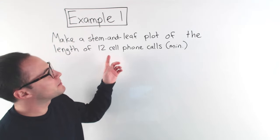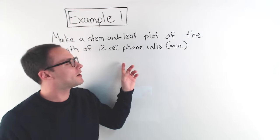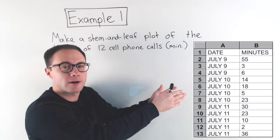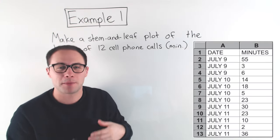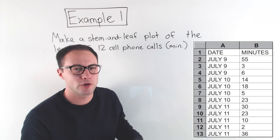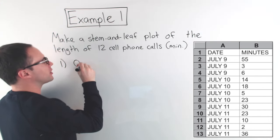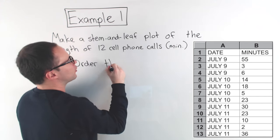Okay, example one: make a stem and leaf plot of the length of 12 cell phone calls, and that's length in minutes. Here's our data over here. To make the stem and leaf plot, I'm going to show you step-by-step how to do it. The first step, as always when we have data, is to order the data.